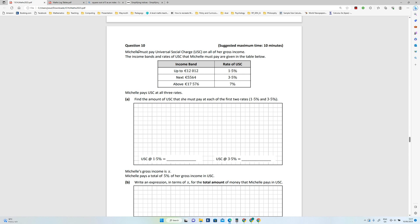You've got three different rates. Michelle pays USC at all three rates. Find the amount of USC that she must pay at each of the first two rates: one and a half percent and three and a half percent.